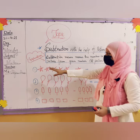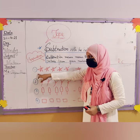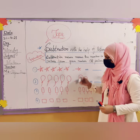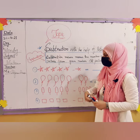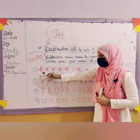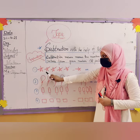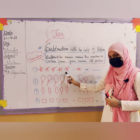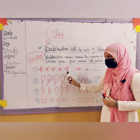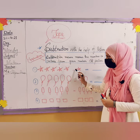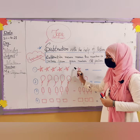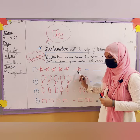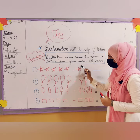Now for question number one, we will draw stars. Let's start counting together: one, two, three, four, five — these are five stars. And over here is the minus sign.